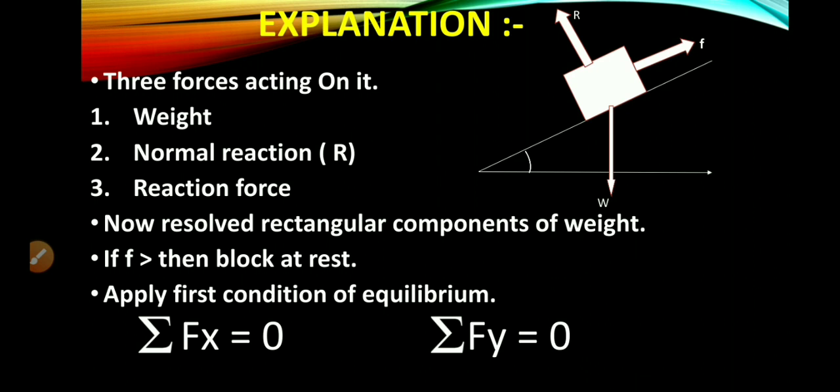If the block is in the form of rest, then we apply the first condition of equilibrium. The equation of first condition of equilibrium is summation of Fx equals 0 and summation of Fy equals 0. The weight moving downward is divided into two components: along the x-axis and y-axis.